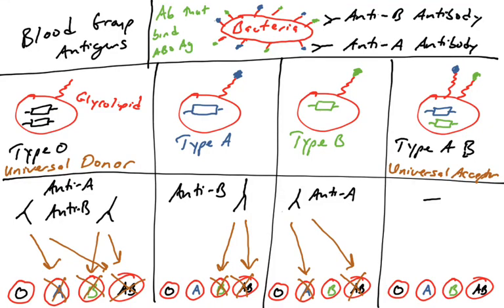We just covered in the previous video blood group antigens: type A, type B, type AB, and type O individuals, and why it's important to check the type of blood before you give a blood transfusion.